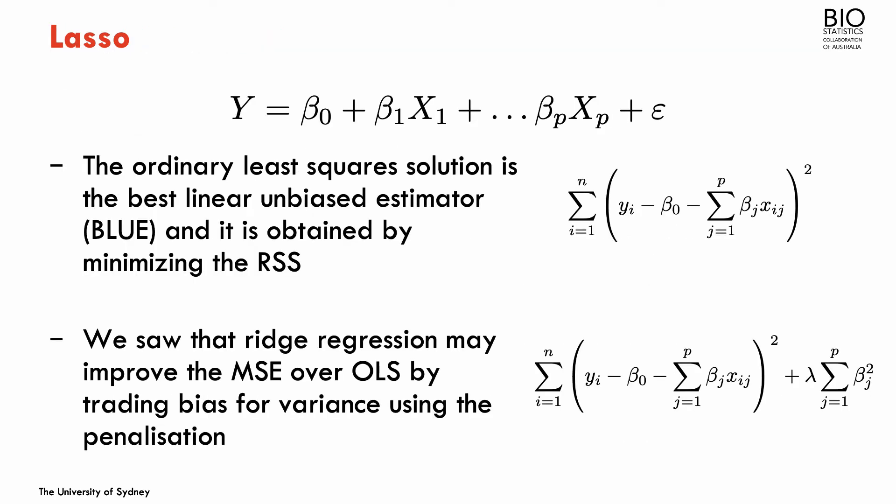As in the previous sections, I'm going to focus on the linear model, although the reasoning we're doing here can be extended to generalized linear models. For the linear model, the ordinary least squares estimates for the beta parameters is the best linear unbiased estimator, obtained by minimizing the residual sum of squares, or equivalently by maximizing the likelihood. The maximum likelihood and ordinary least squares estimates for the regression parameters are exactly the same.